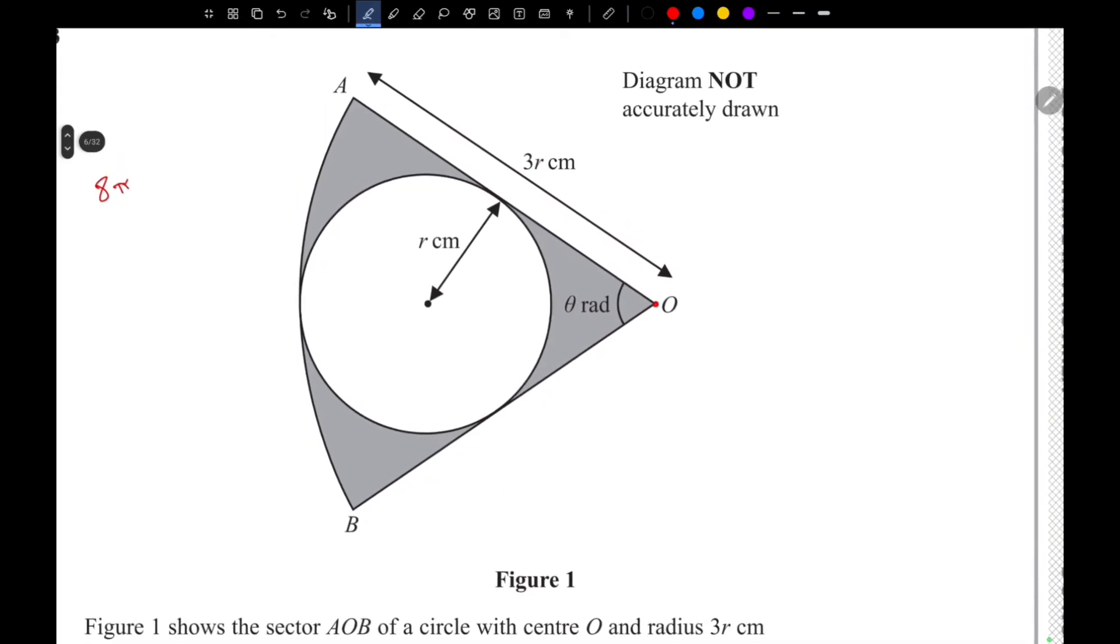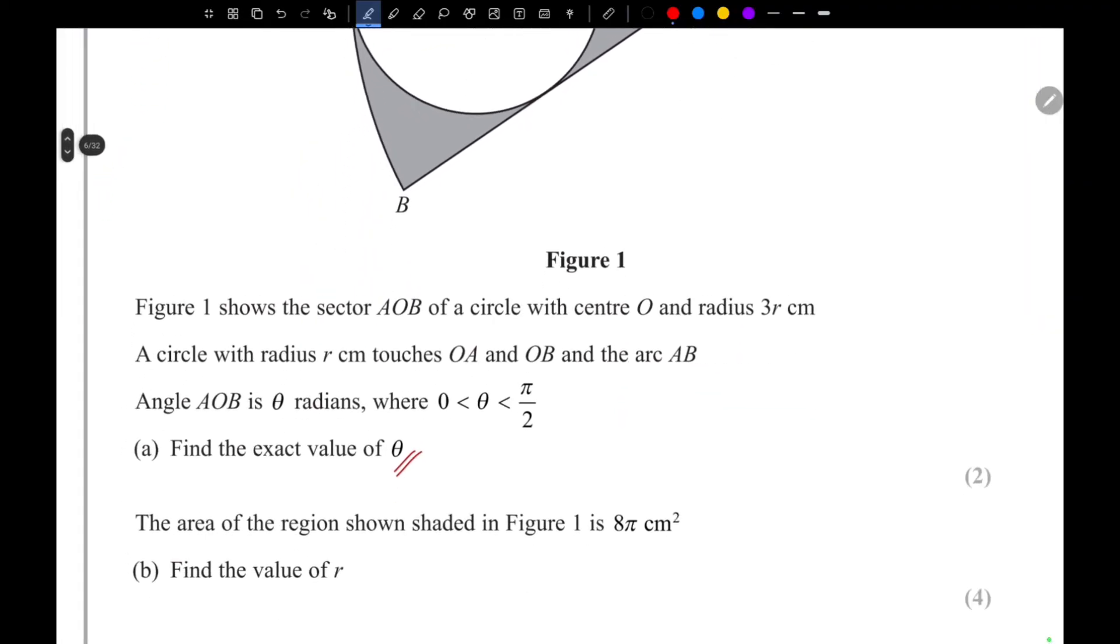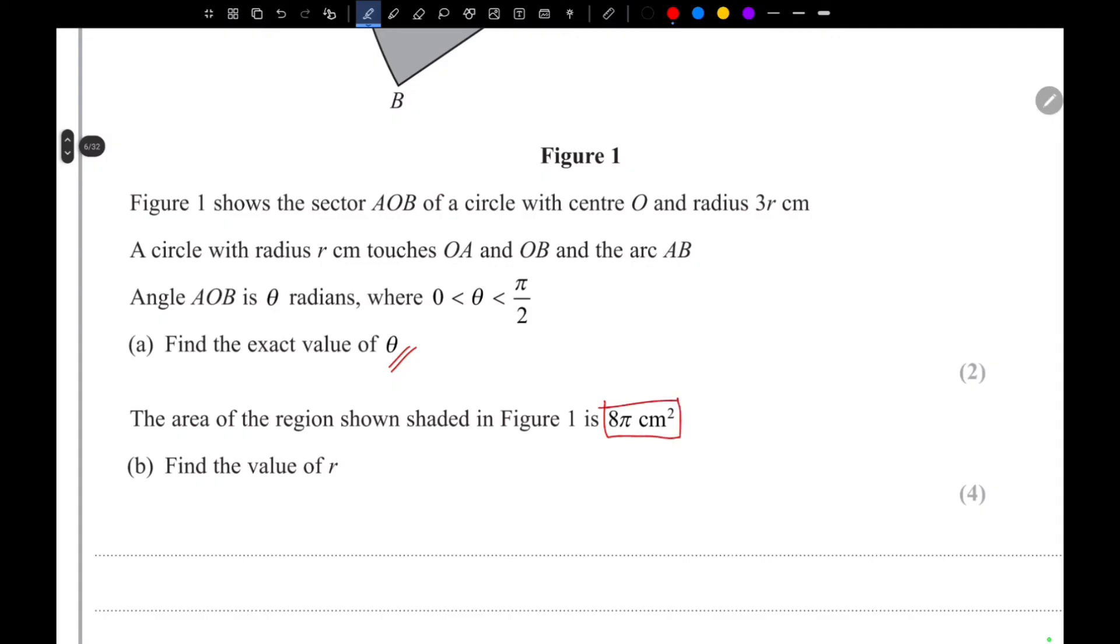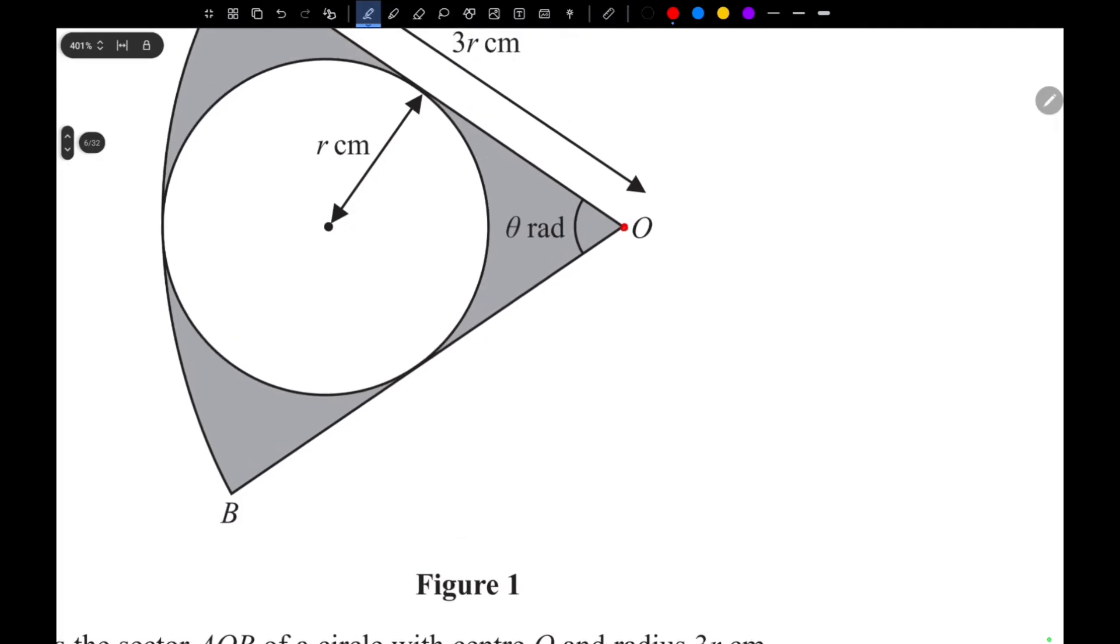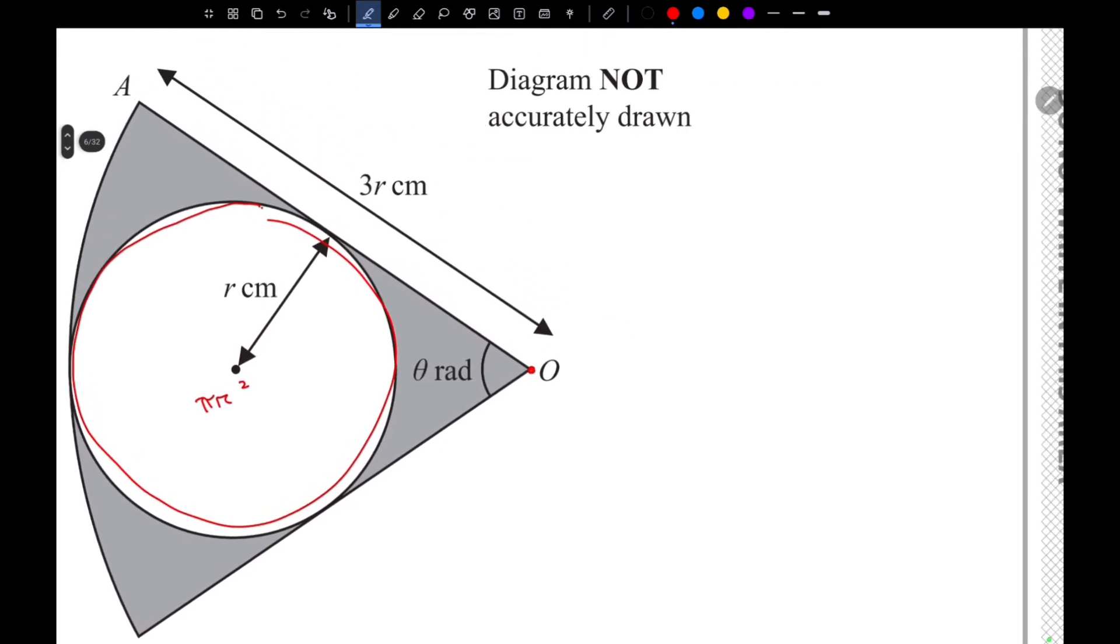Now we need to find out the value of R, so we need to form an equation using this information. We can say that the area of this circle, which is πR², and the whole area of the sector OAB will be half R squared theta, which is 9R² theta multiplied by theta which is π over 3.